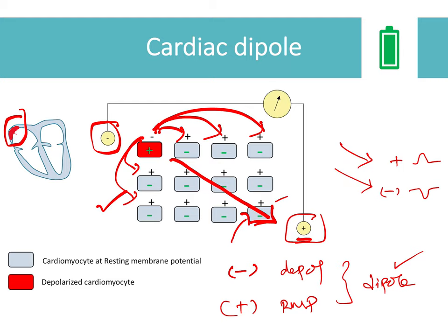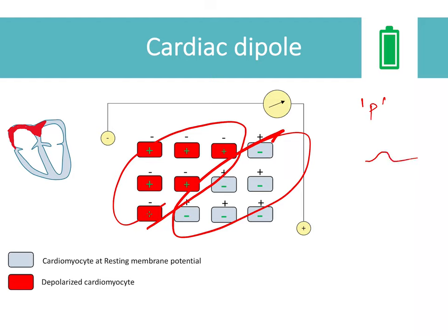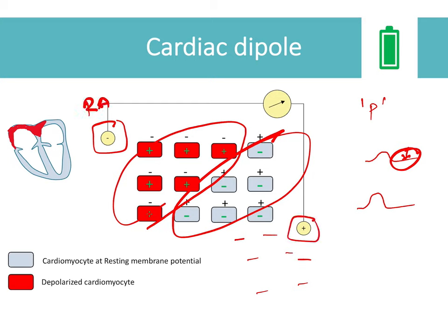The sum of all currents flowing at a given point in time is the instantaneous cardiac vector, and the electrodes record the magnitude of this vector. As depolarization progresses in the atria, more and more cells become negative and a waveform develops — the atrial depolarization waveform, which is the P wave. It gradually increases and decreases, returning to baseline when all cells are depolarized and there is no longer a potential gradient. This corresponds to the lead II arrangement, with one electrode on the right arm and one on the foot.